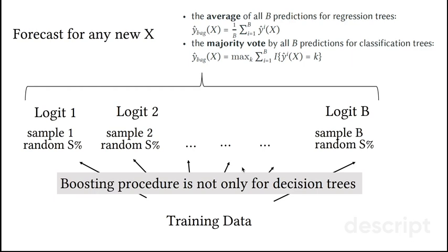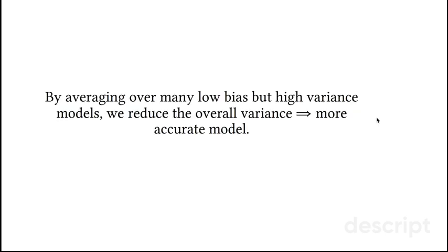Bagging procedure can be used not only for decision trees. For example, here, we apply logistic regression or OLS or whatever model you would want to use. And then the forecast would be simply the averaging or a majority vote from different models on different subsamples. By averaging over many low bias but high variance models, we reduce the overall variance. So, we are able to get a more accurate model.